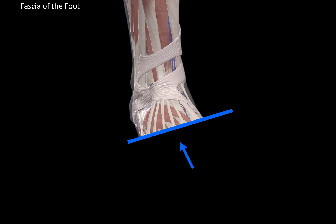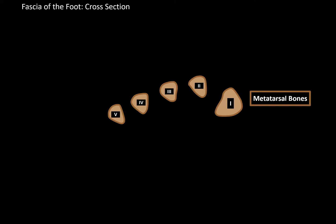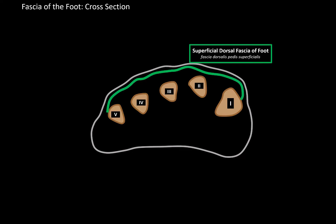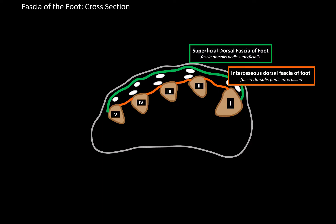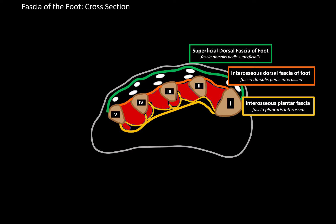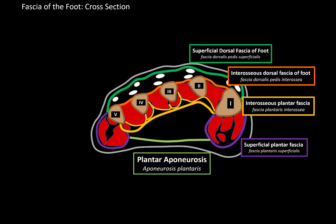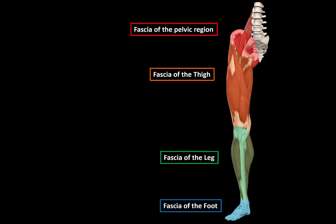Lastly, if we cross-section the foot and look at it from this view, we see the metatarsal bones from the first to the fifth. On the dorsum of the foot is the superficial dorsal fascia, which contains very little fat but holds tendons of the long muscles like extensor digitorum longus and extensor hallucis longus, as well as blood vessels and nerves. Between the metatarsals is the interosseous dorsal fascia covering the interosseous muscles from a dorsal view, and the interosseous plantar fascia covering them from the ventral aspect. Then there is the superficial plantar fascia covering the lateral and medial foot muscle groups, which also fuses with the plantar aponeurosis. That was everything for the fascia of the lower limb — I hope that was helpful.